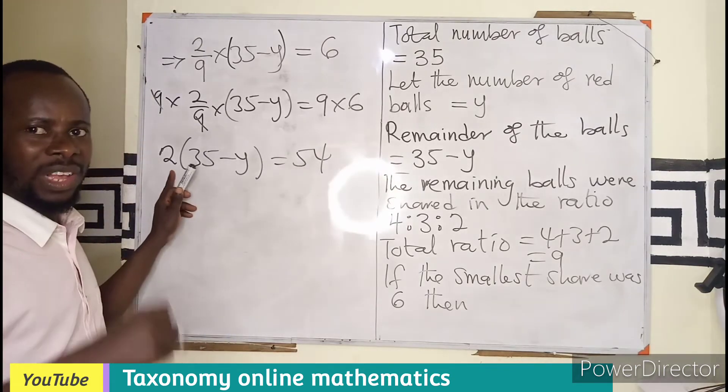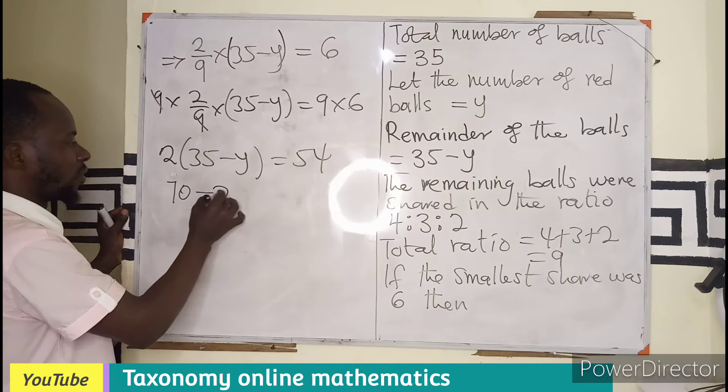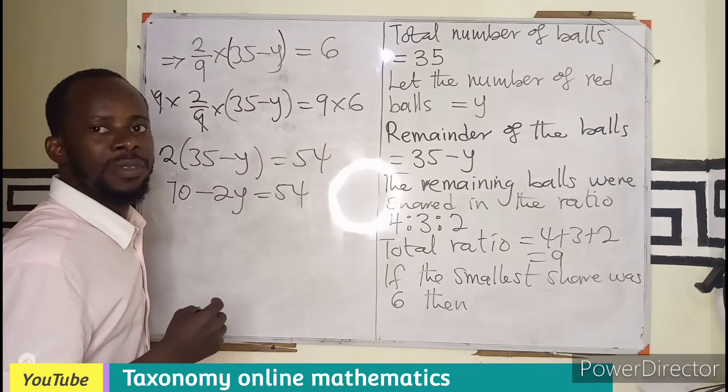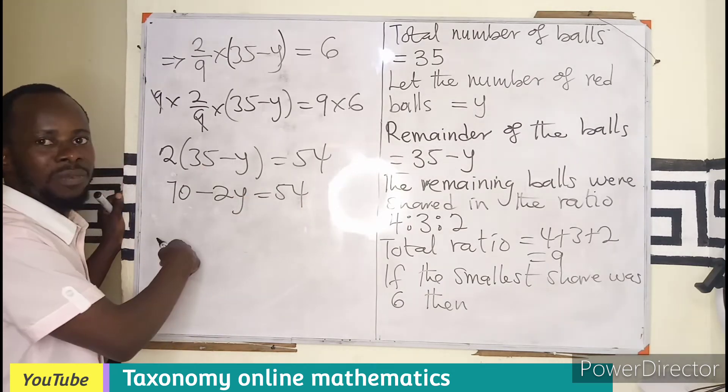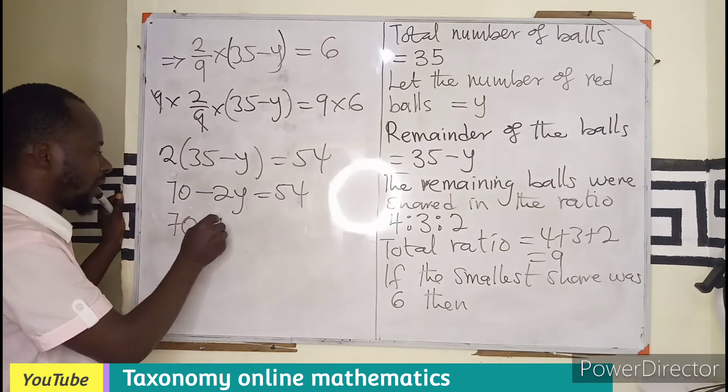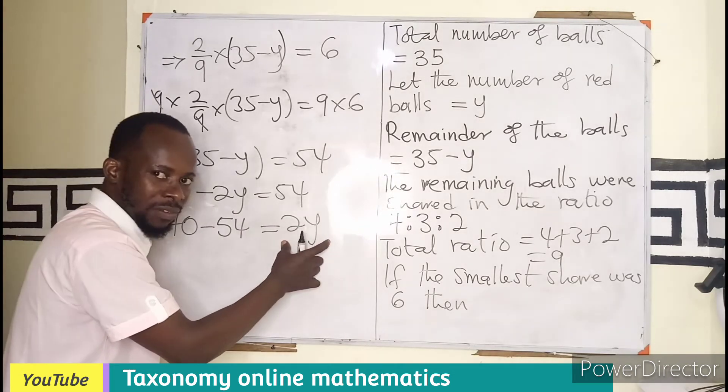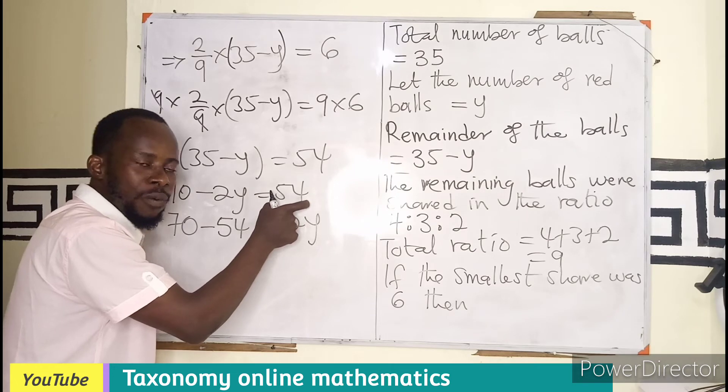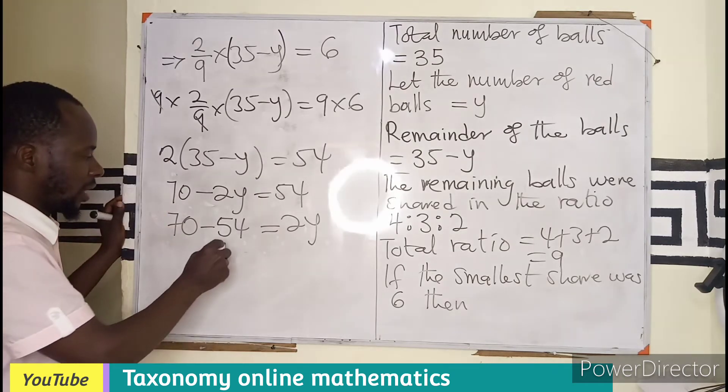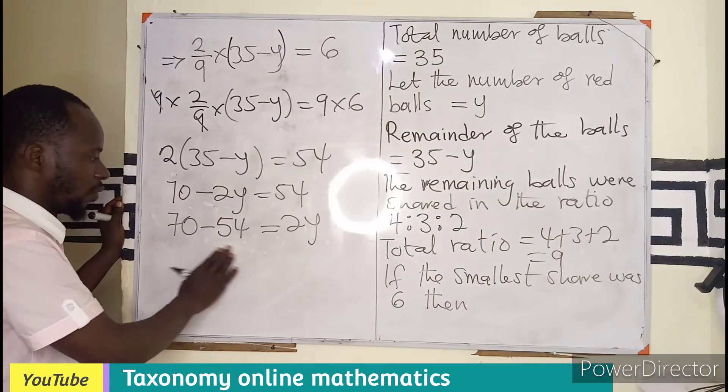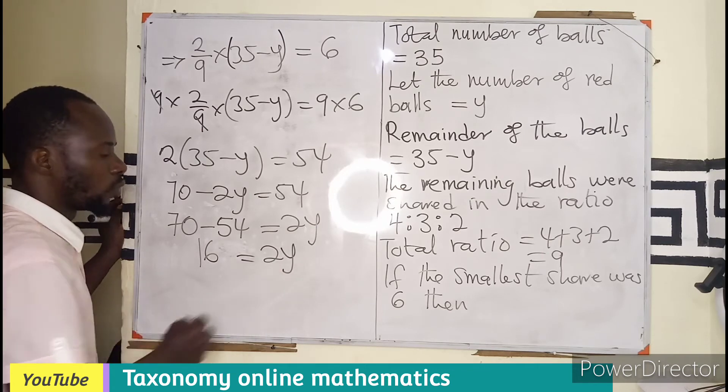If that is the case, we have to expand this bracket. This will give us double of that to be 70. So 70 minus 2Y equals to 54. Attention on Y. So we send Y and bring 54. So 70 minus 54 equals to 2Y. Negative 2Y becomes positive because of the equal sign. Positive 54 becomes negative 54 because of the equal sign. So with the subtraction, I think 16 will give me this. So it means I have 16 equals to 2Y.